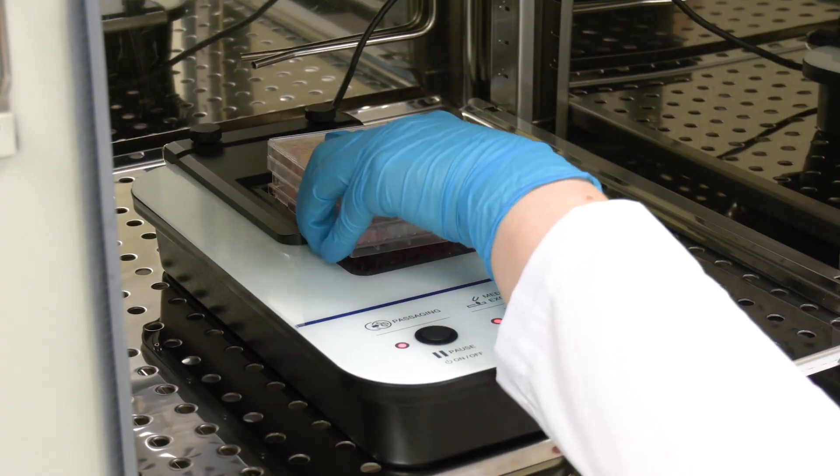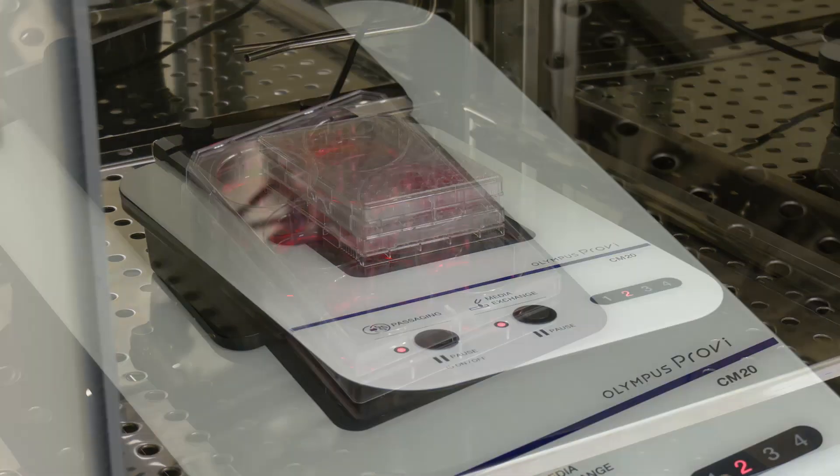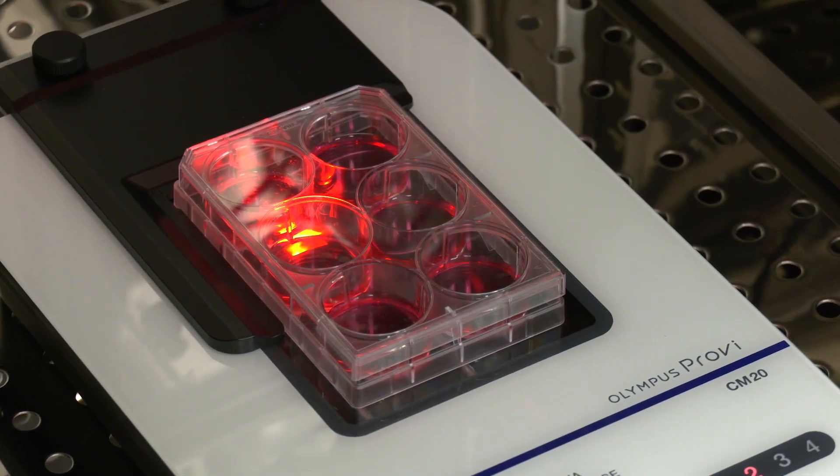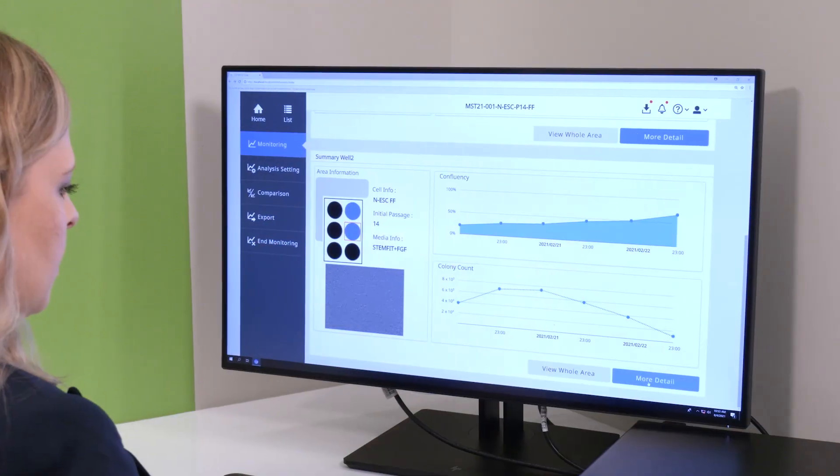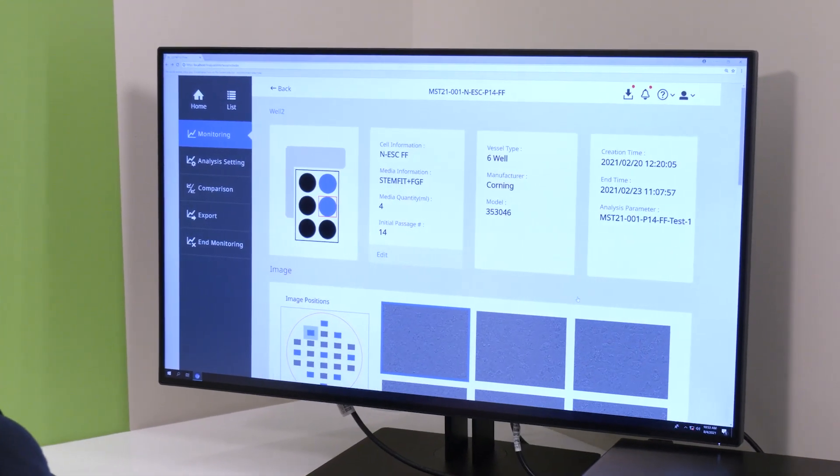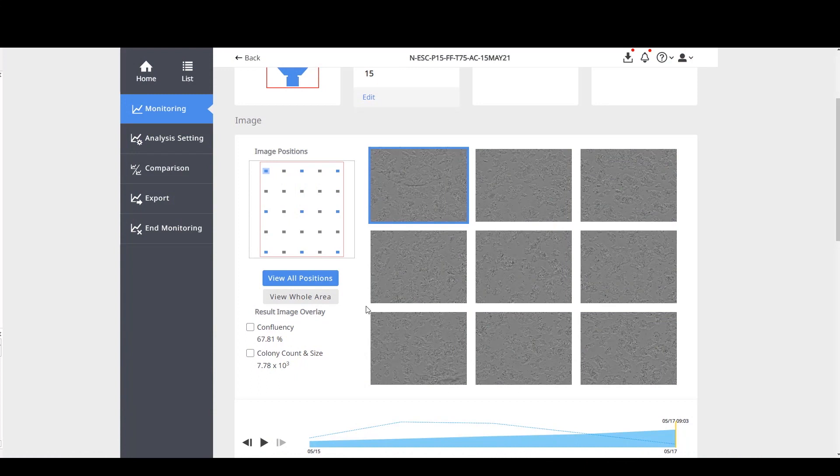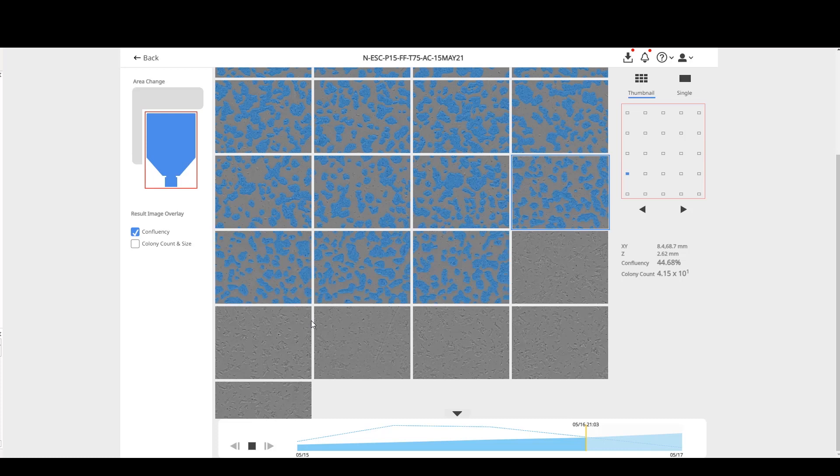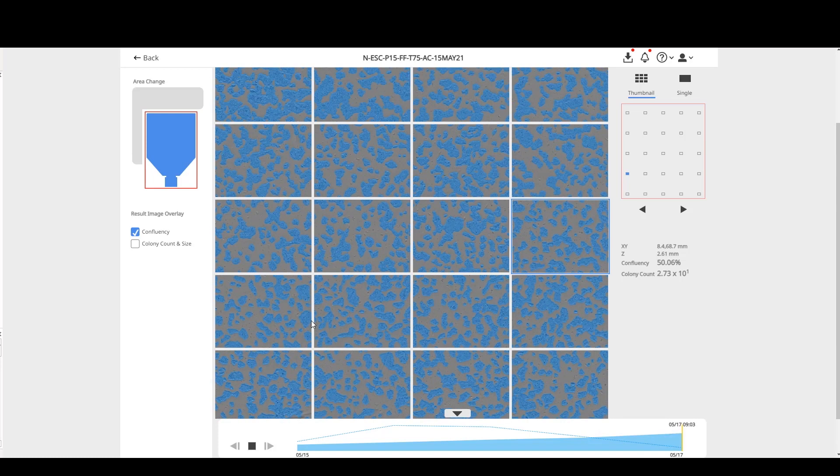The system will periodically scan multiple points of the vessel to provide a complete overview of your cell's health. Traditionally, we rely on our eyes to determine the quality of cell cultures, but if we use artificial intelligence to determine confluency, we reduce the user bias. The result is a more reliable cell culture workflow.